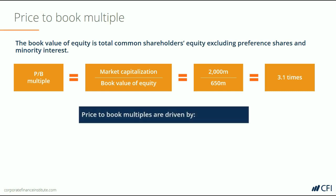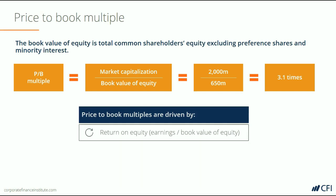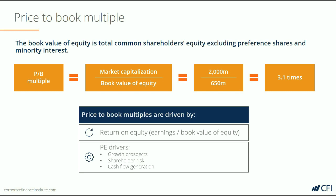The price-to-book multiple is driven by the return on equity and the drivers of the PE multiple, including risk and growth. You can derive this relationship by taking the price-to-book multiple and dividing it by the price-to-earnings multiple. What you're left with is earnings divided by book, which is the return on equity ratio.